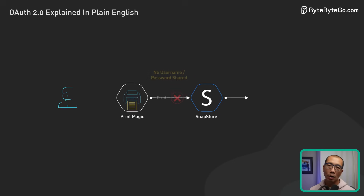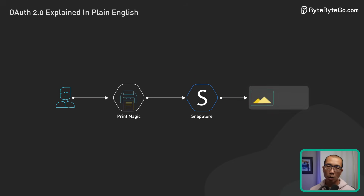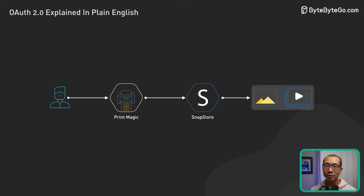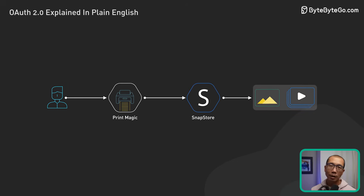This is an example of the OAuth flow — an elegant dance between us, PrintMagic, and SnapStore, all orchestrated by OAuth 2.